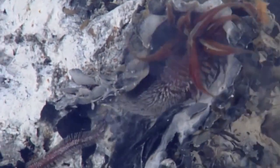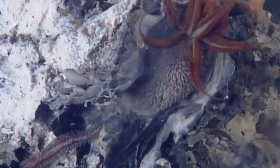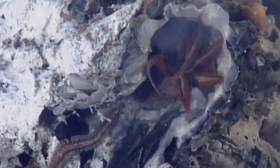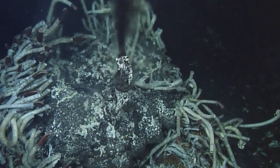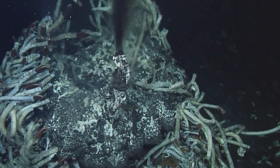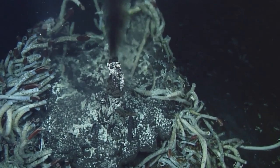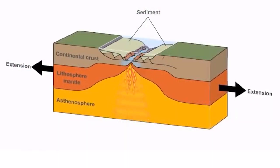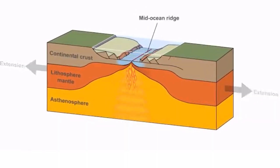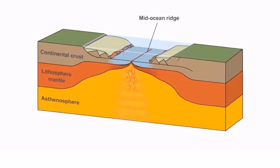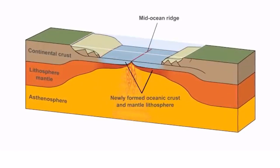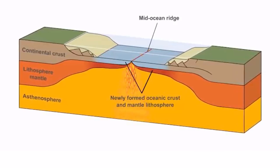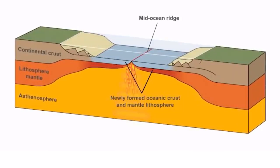So volcanic activity at divergent boundaries doesn't just build the Earth's crust — it also creates some of the most bizarre and extreme habitats where life can adapt and thrive in ways we're only beginning to understand. Understanding divergent boundaries is key to understanding Earth's dynamic nature. They help explain why we have earthquakes, volcanic eruptions, and the constant reshaping of the Earth's surface. Plus, by studying them, we learn more about the forces that drive the continents and oceans.